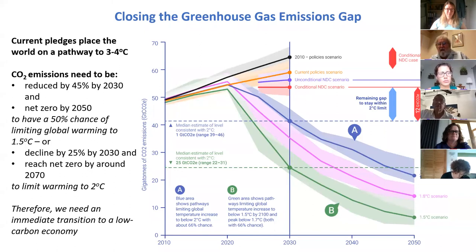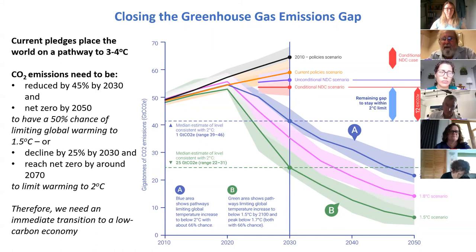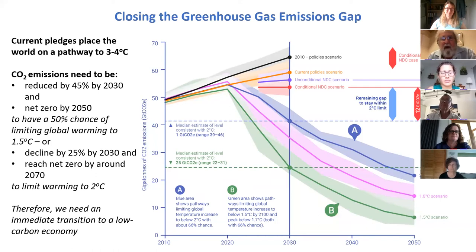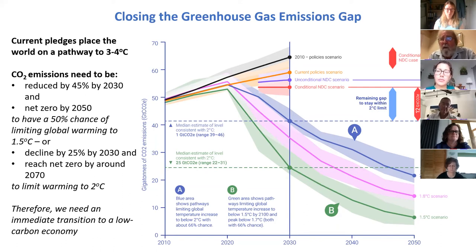To be on a 1.5-degree pathway, we need to reduce emissions by 45 to 50% by 2030 relative to 2010 levels and reach net zero by 2050 — and even that gives us only a 50% chance of reaching that target. For a 2-degree target, emissions must decline by 25% by 2030 and reach net zero around 2070. With all current pledges under the Paris Agreement, emissions in 2030 will be comparable to today — not 20% or 45% less — and some countries are not even meeting their current pledges. Therefore, we are on a pathway to 3 to 4 degrees Celsius, not 1.5 or 2.